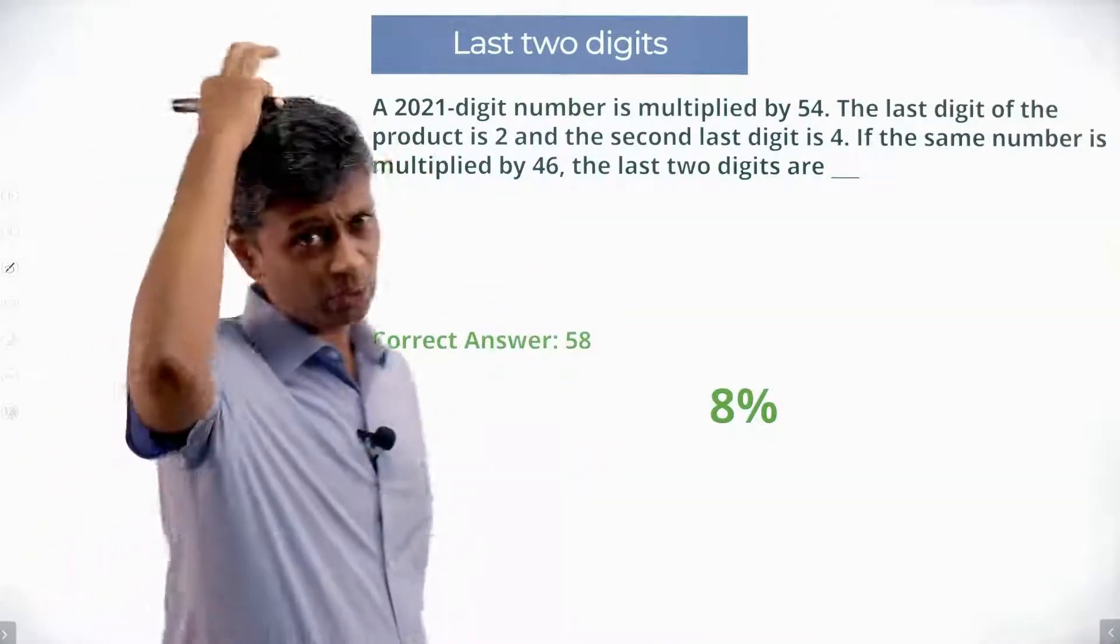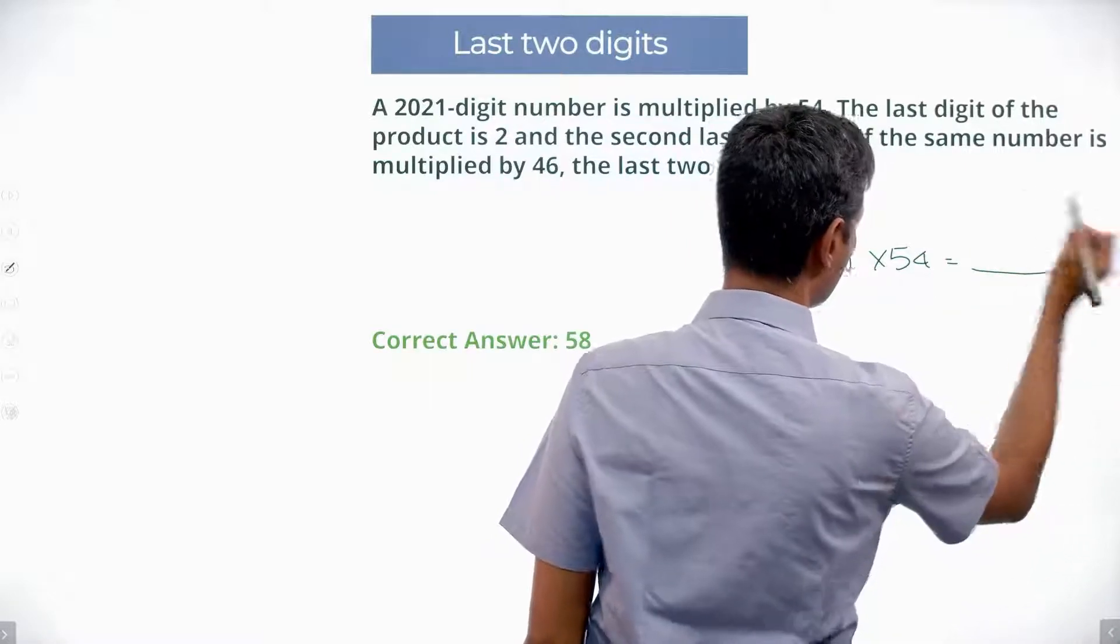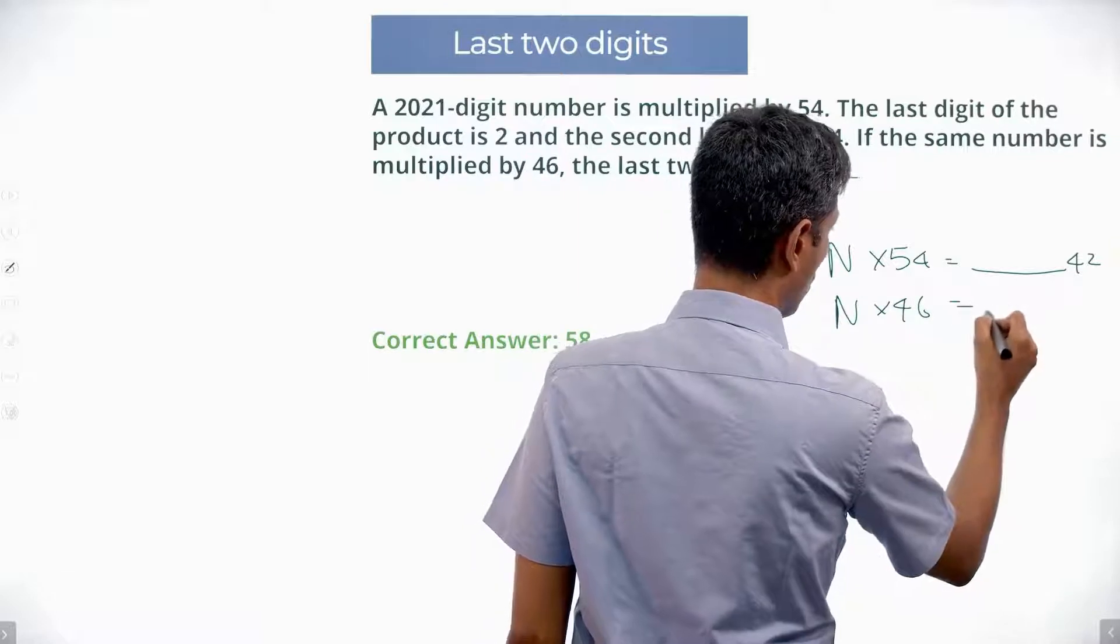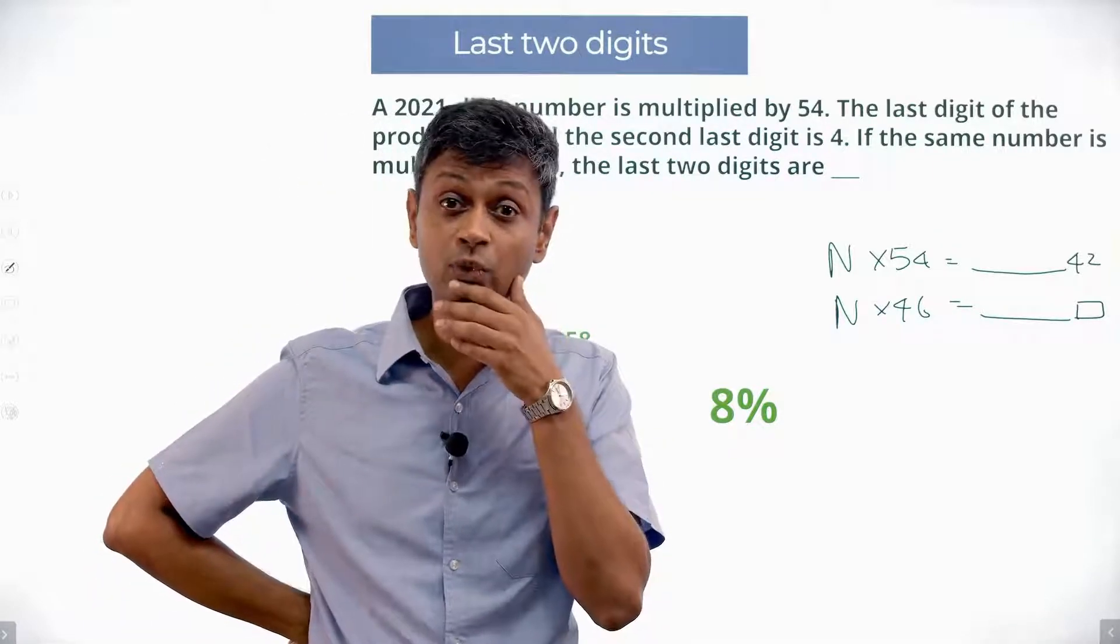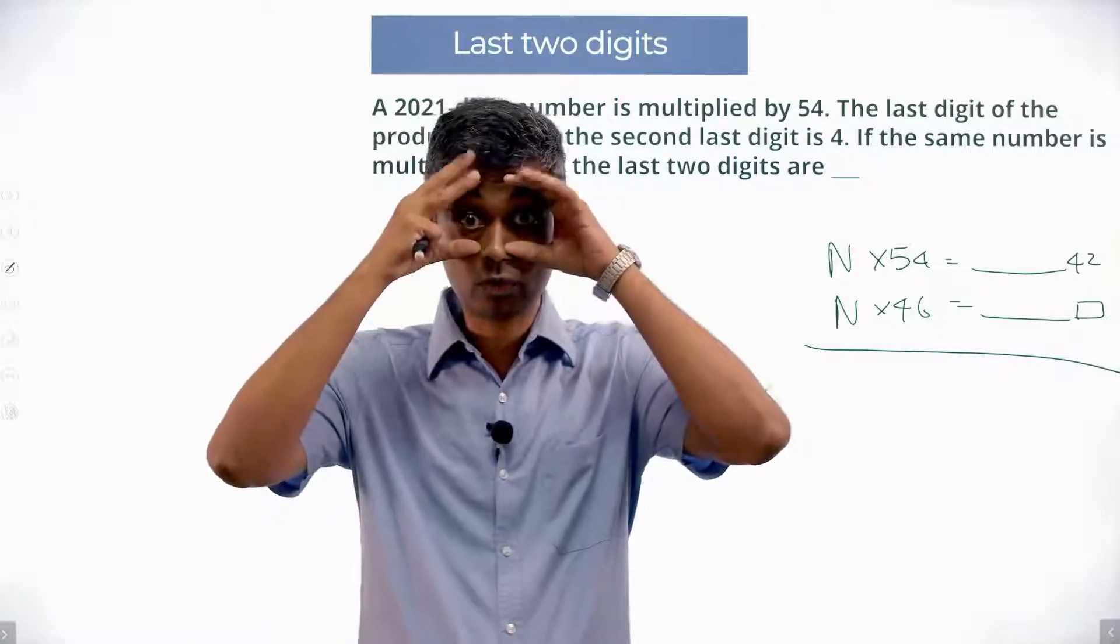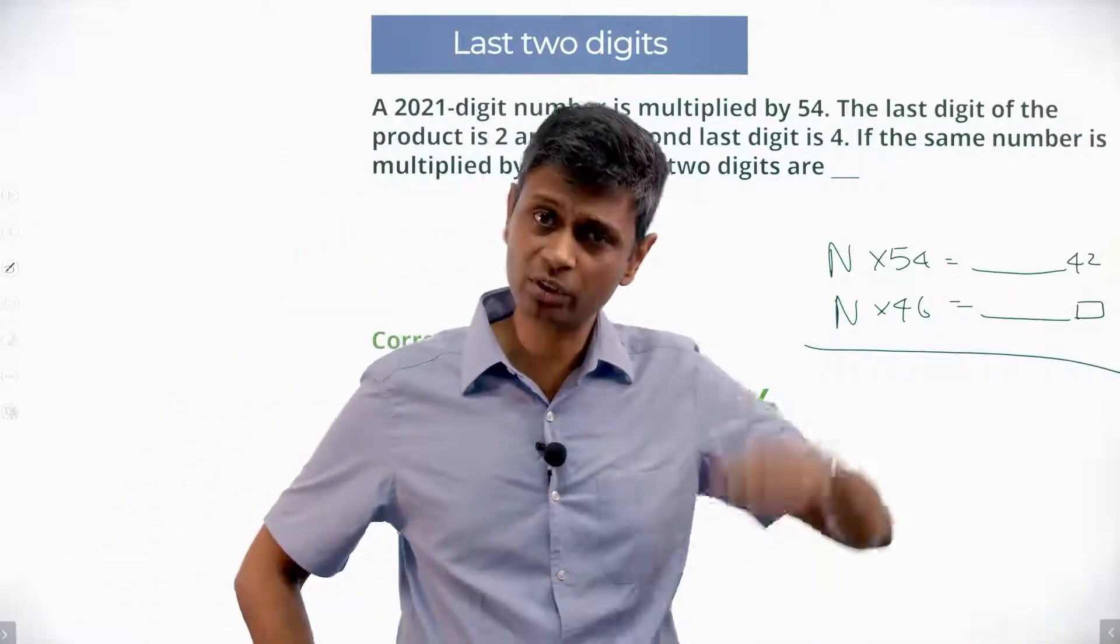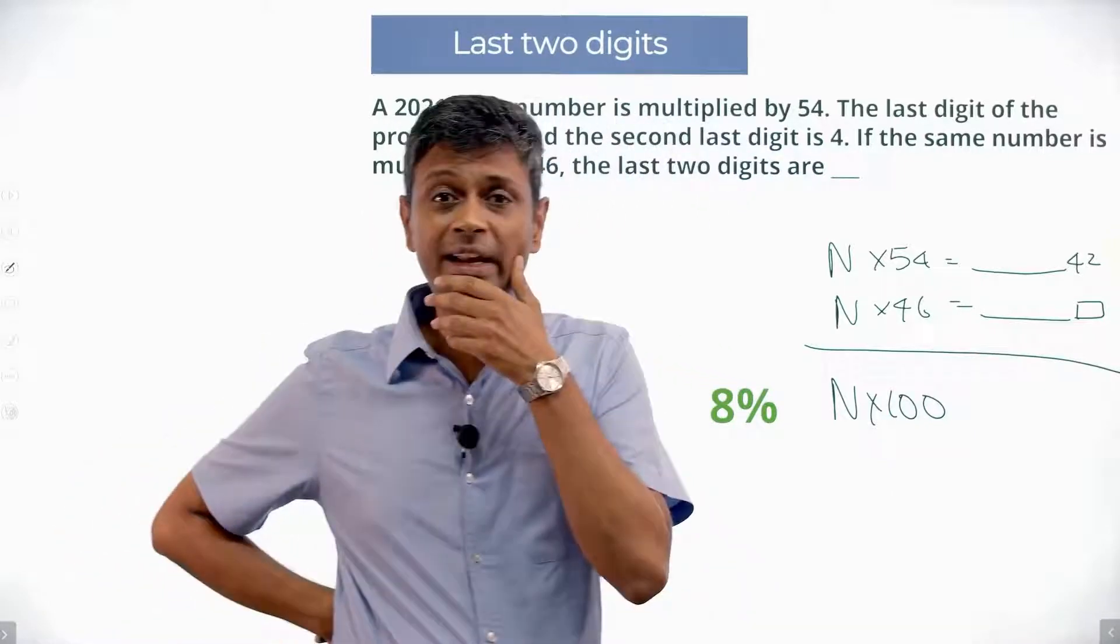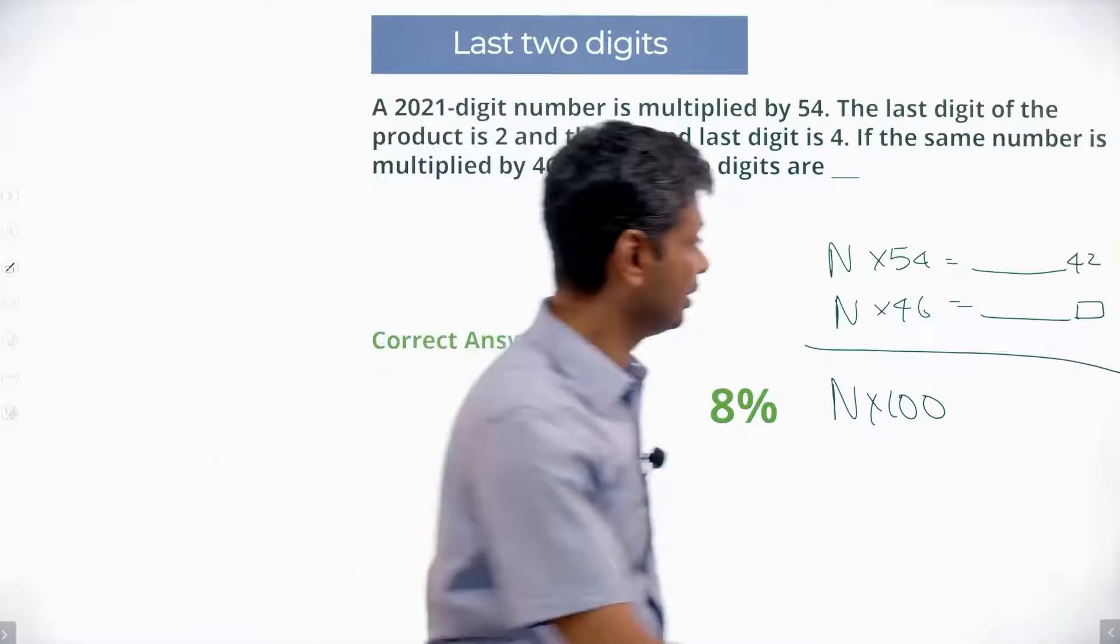There is this number N, 2021-digit number. I multiply N into 54. I get some large number 42. And the last 2 digits are 42. We want to find this number N multiplied by 46. What are the last 2 digits? Tough question, obviously. First, N into 54, N into 46. N into 46, we need to find the last 2 digits. What am I going to do? I multiply a number by 54. I multiply a number by 46. I look at this and say, nice. 54, 46. I'm going to open my eyes and see. Hey, brilliant. 55, 54, 46. There's something that pops out. Is there some genius sitting in 54 plus 46? 54 plus 46 is 100. If I add these 2 numbers, it is nothing but N into 100. N into 100. N is a 2021-digit number. Obviously, I cannot find N into 100. I don't even know N. But the one beautiful thing I know about N into 100 is that the last 2 digits are 0.